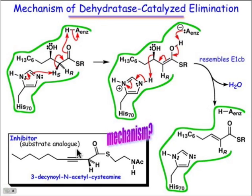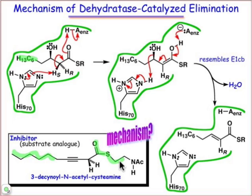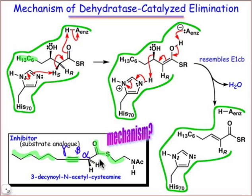Let's take a look at this substrate analog, which is basically going to fool the enzyme and bind in the enzyme active site. Notice it has this long alkyl chain just like the alkyl chain of the substrate, so that's going to fit into the enzyme active site. It also has a thioester group just like the substrate. But what it also has at the β-γ positions — those positions there and there — is a carbon-carbon triple bond. We're going to see that this fools the enzyme into performing some unique chemistry.